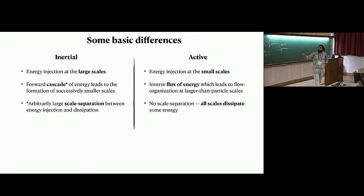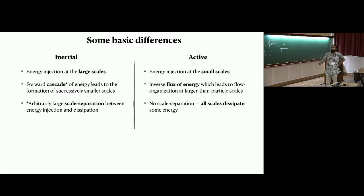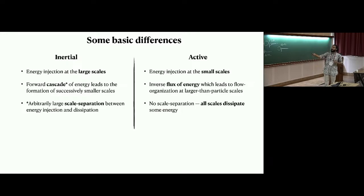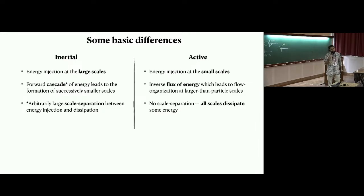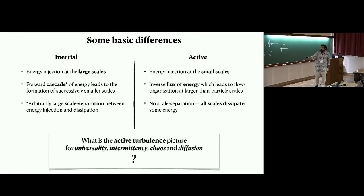There are some very important differences to keep in mind between inertial and active turbulence. In inertial turbulence, energy is injected at large scales with a forward cascade; in active turbulence, injection is always at small scales. Active turbulence is typically at low Reynolds number, highly viscous, so all scales dissipate here. But you do have an inverse flux of energy because there's clearly large-scale organization coming from the energy injection of individual particles.